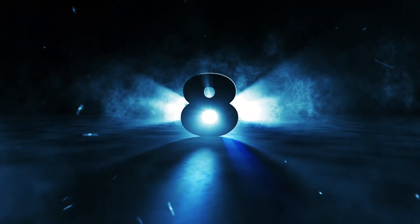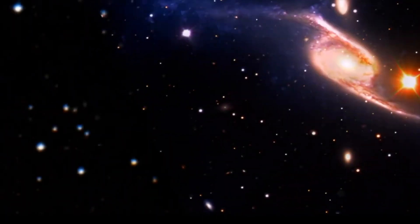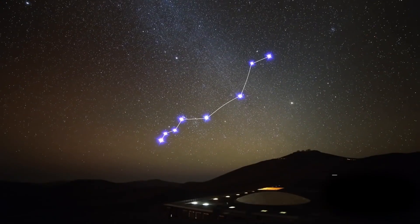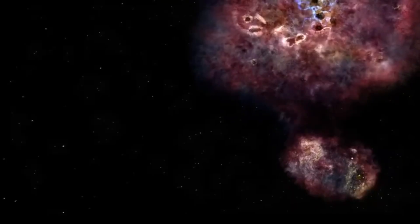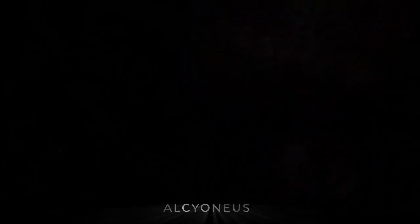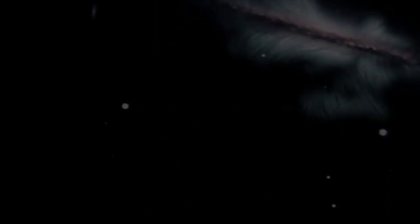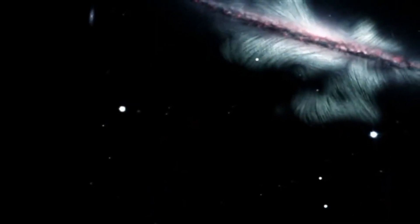Number 8. The Massive Radiolobes of Alcyoneus. Located nearly three billion light-years away from Earth, within the constellation of Lynx, sits the unique radio galaxy called Alcyoneus. Named for one of the giants Hercules faces in Greek mythology, this galaxy lives up to its namesake by generating the largest structure ever made by one lone galaxy.